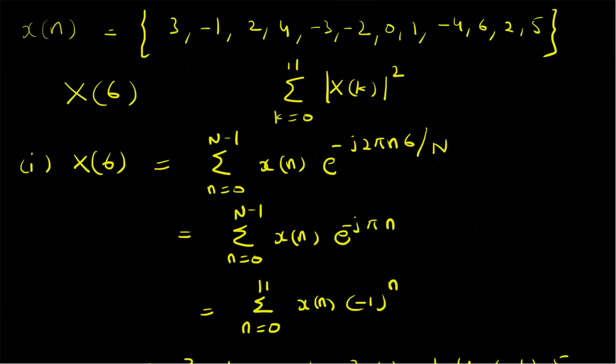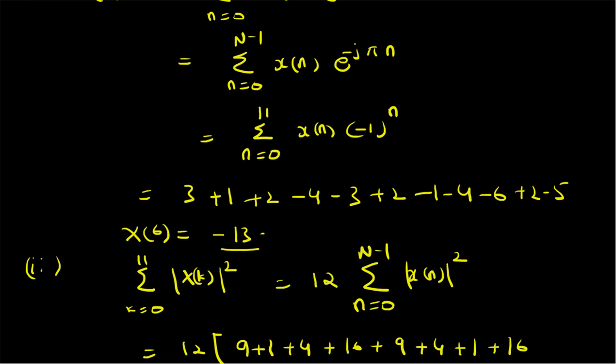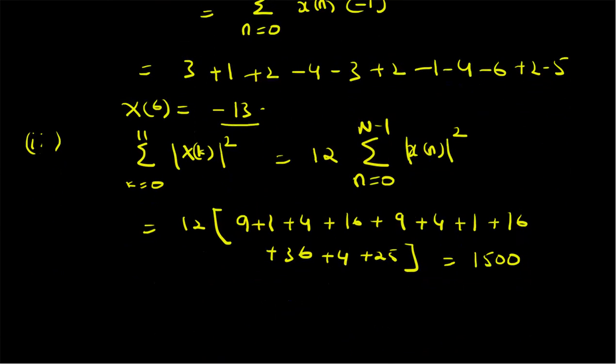To summarize, we have looked at an example illustrating that we do not have to compute the whole DFT sequence to compute certain values. Given x[n] with 12 values, we found X[6] — the DFT value at k=6 — as a weighted sum of the input values where weights are given by (-1)^n. Using this formula, we found X[6] without computing all other DFT values. For the sum of absolute value squares, we used Parseval's theorem and found the result directly from time domain values.